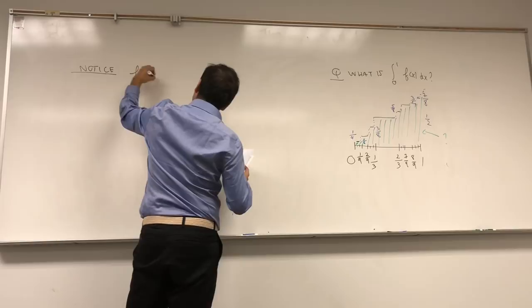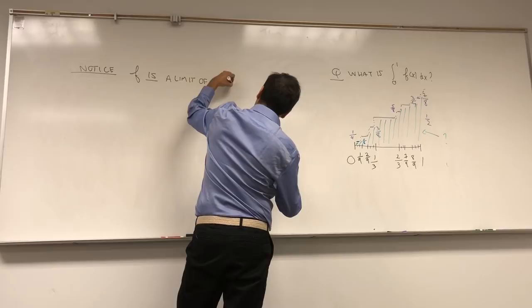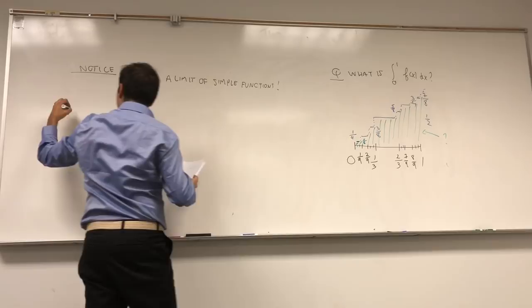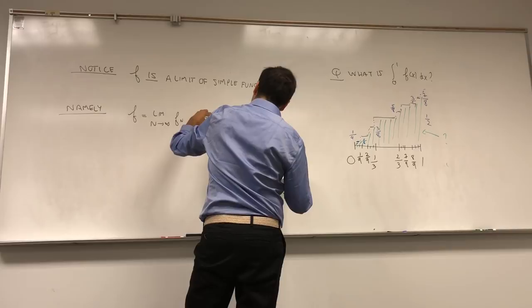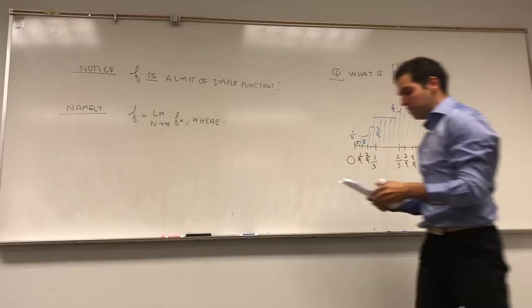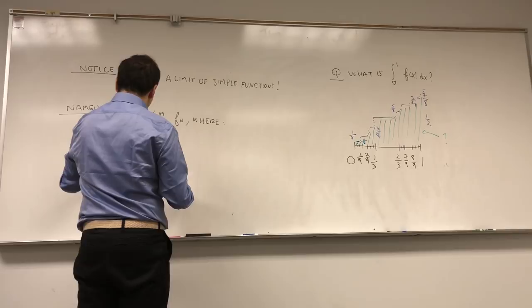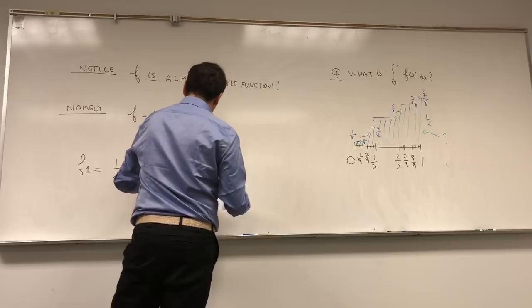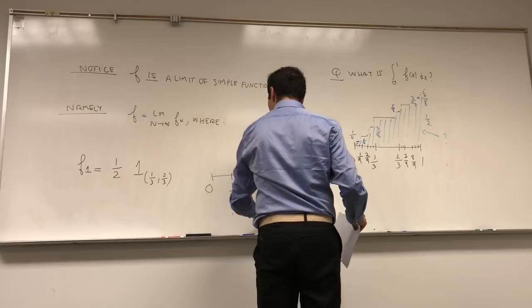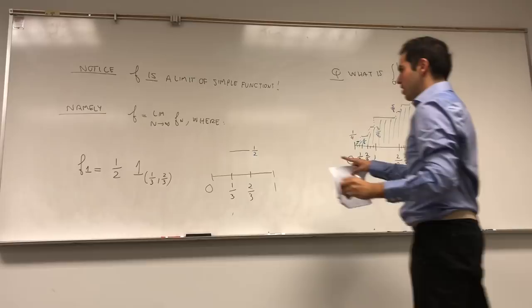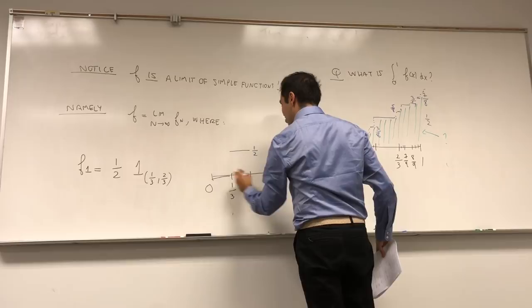F is a limit of simple functions. Namely, F equals the limit as n goes to infinity of F_n. You build the functions in steps. F_1 is 1/2 times the indicator function of [1/3, 2/3]. That is, you take the interval [0,1], take the middle third [1/3, 2/3], and define the value there to be 1/2. That's your F_1.